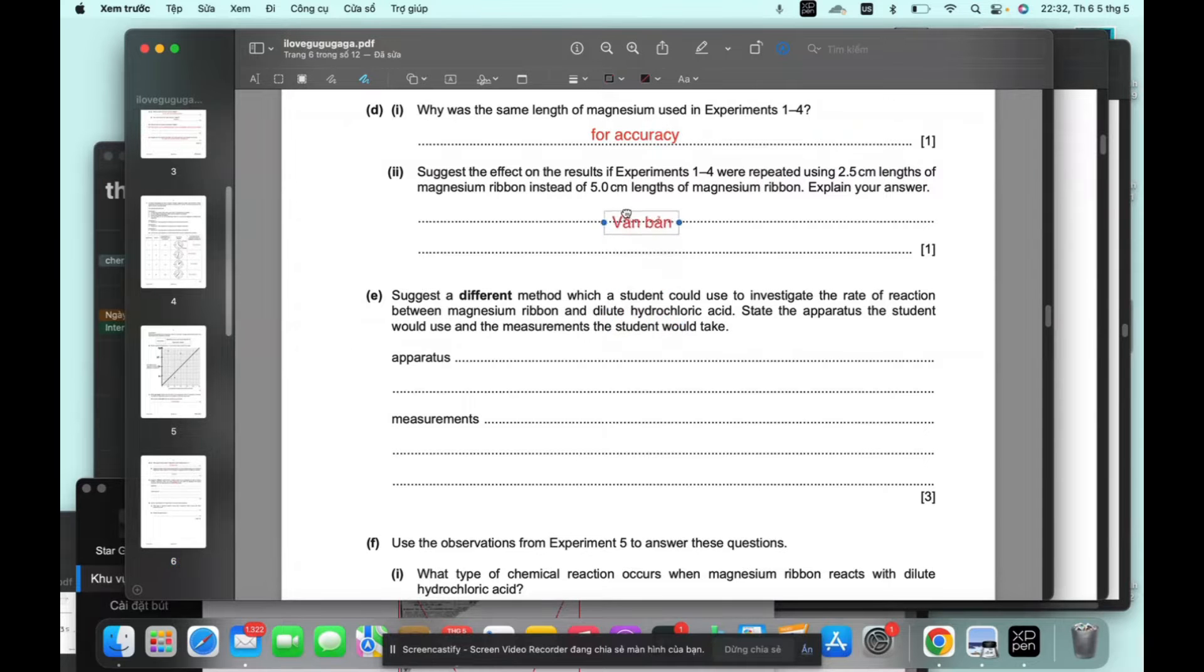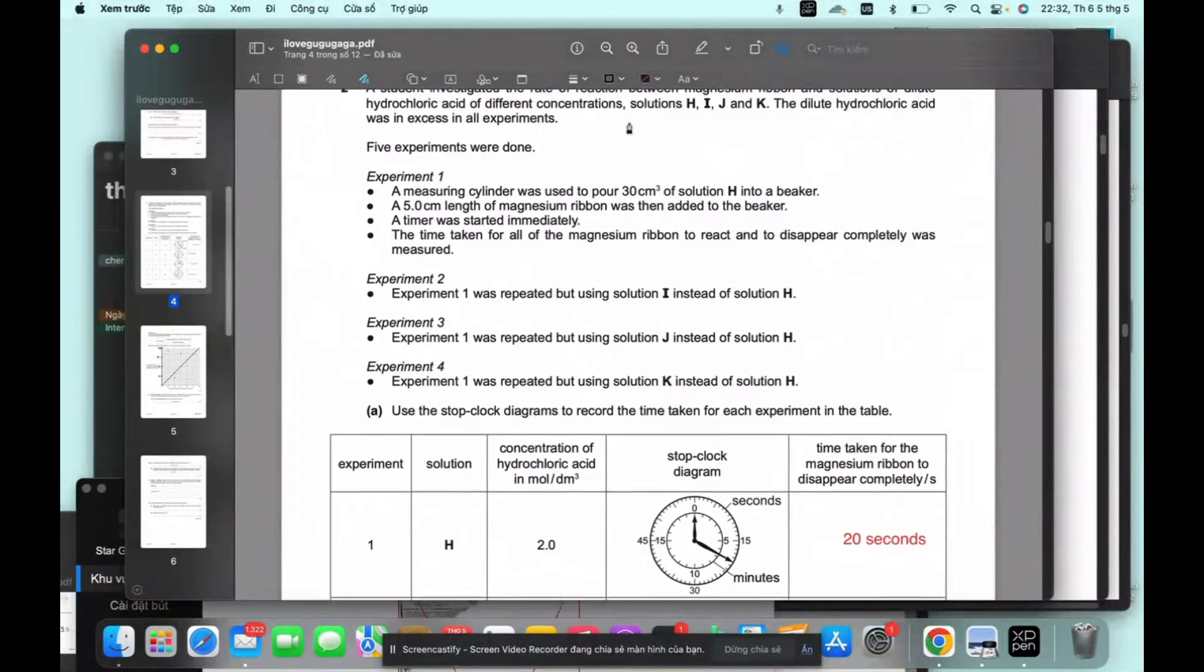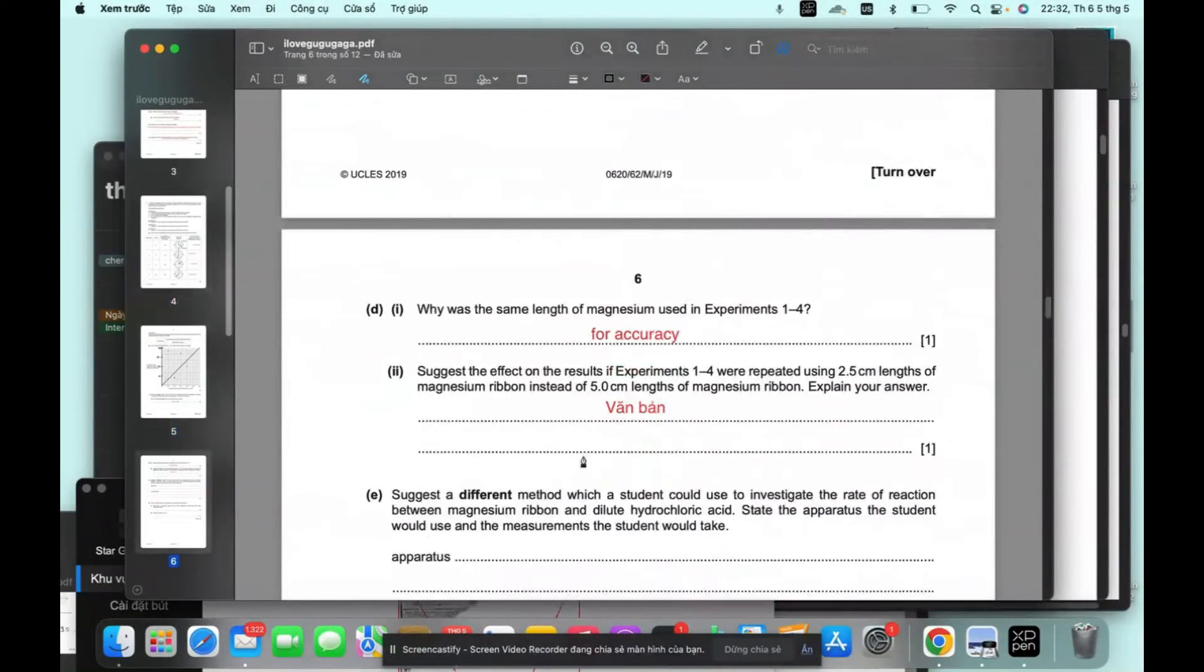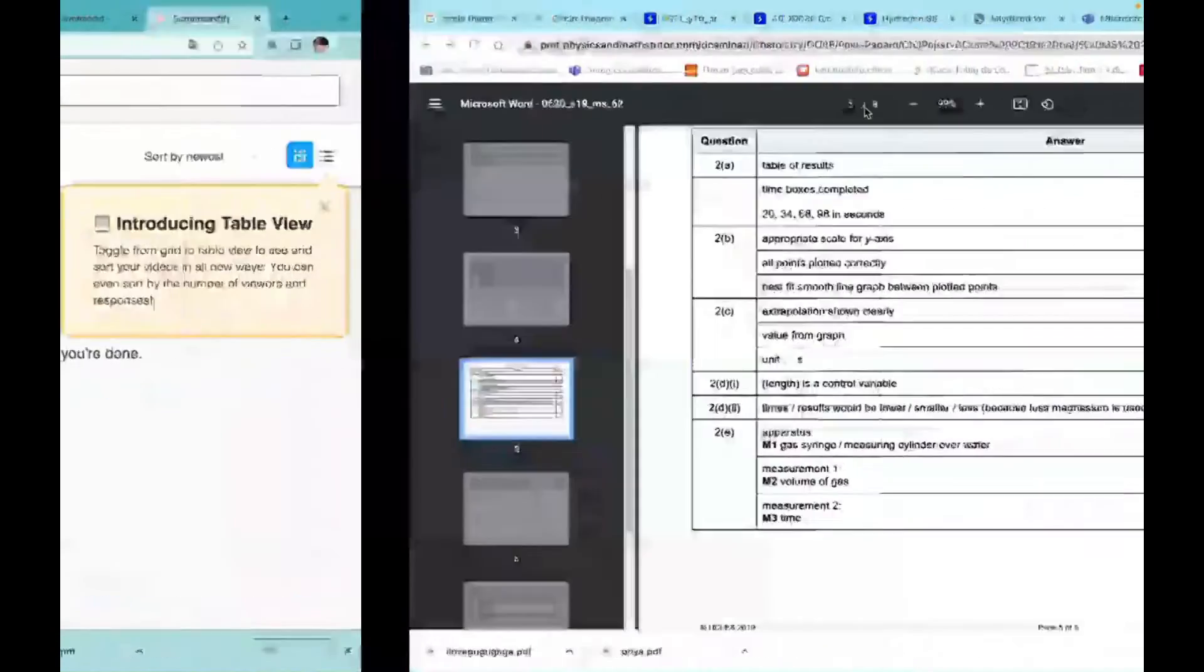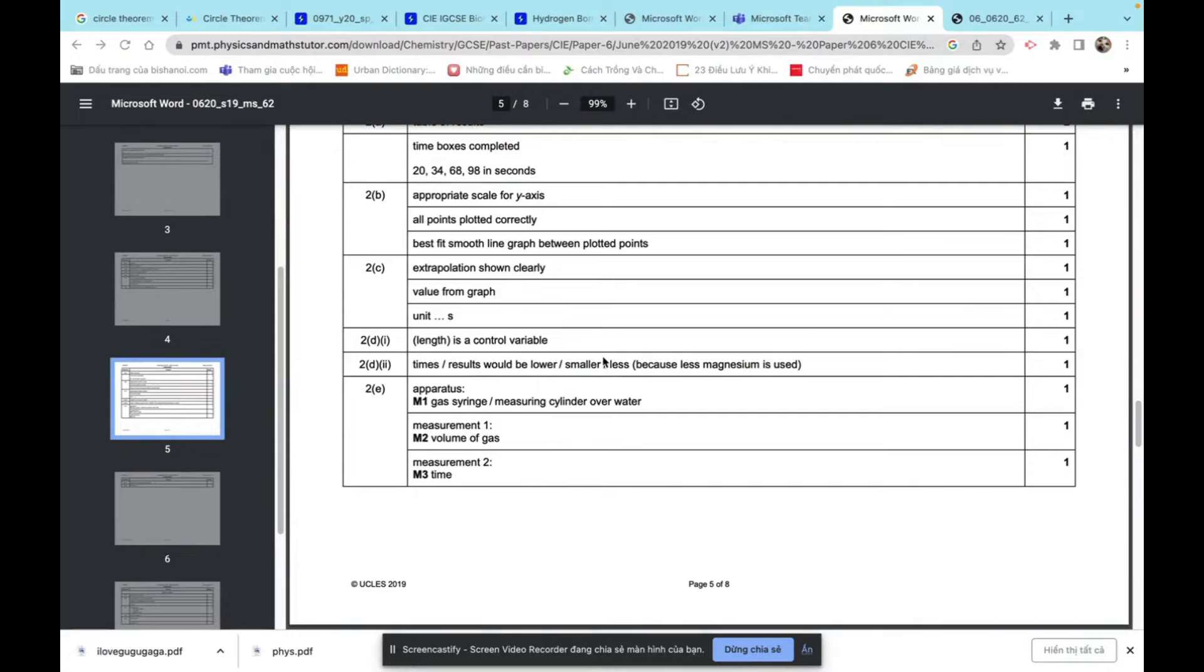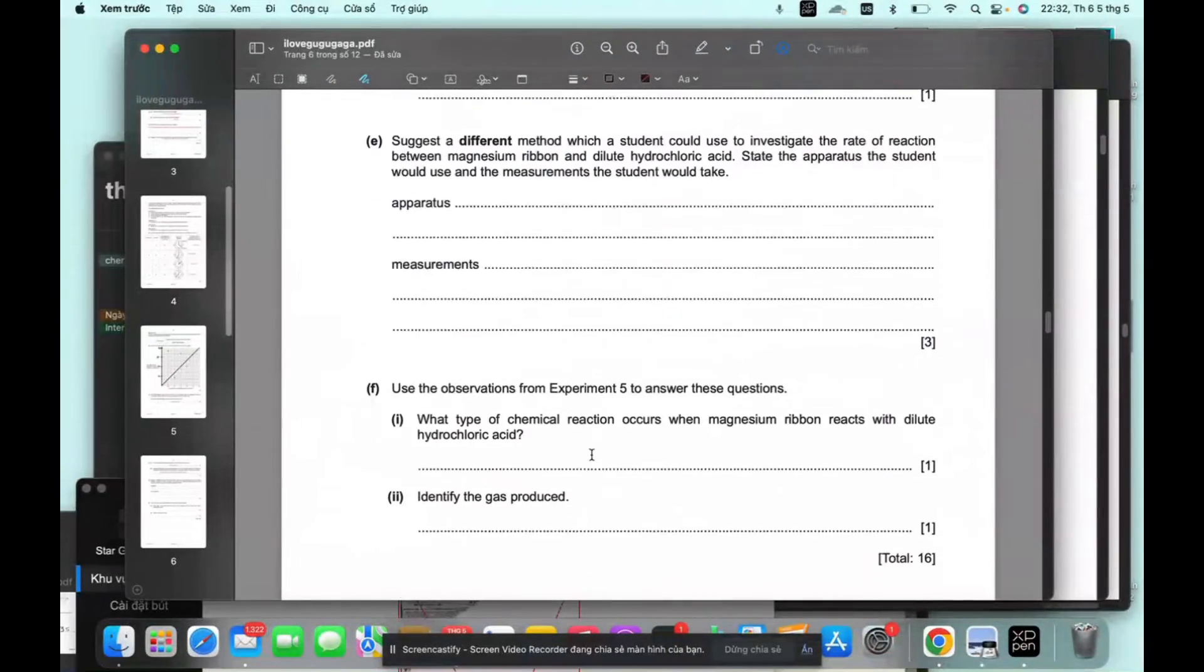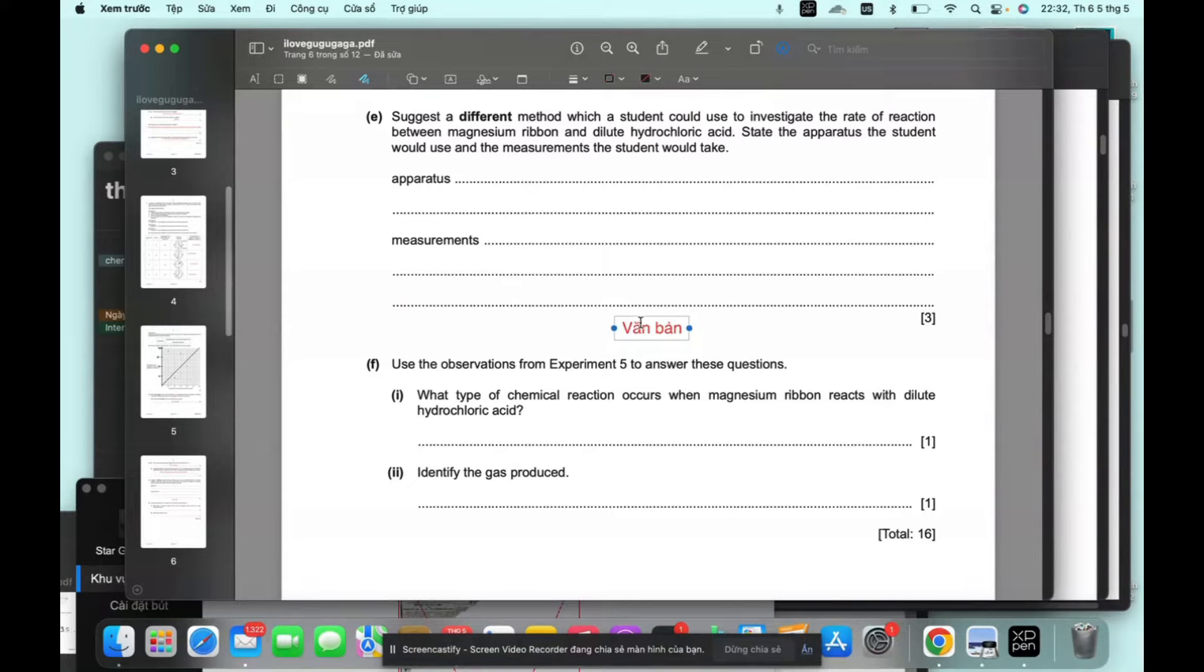So effect on it would use 50 lines off. Shorter because it was shorter time. Because it is a shorter ribbon. Check our answer. So we're because less magnesium is used.